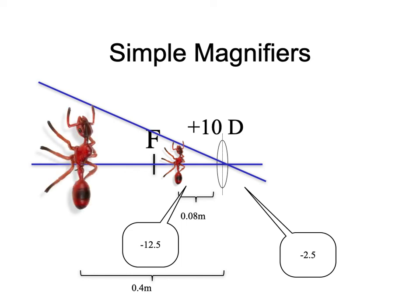When the object is between the lens and F, the image is magnified, upright, and virtual. If the object is between F and 2F — say 0.125 meters — vergence is minus 8 going in, plus 2 coming out, so the image forms 0.5 meters to the right. That image is magnified, real, and inverted.